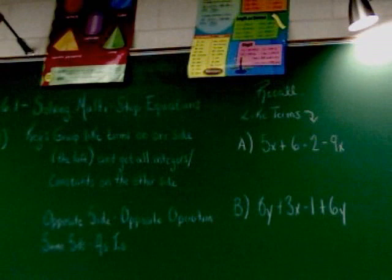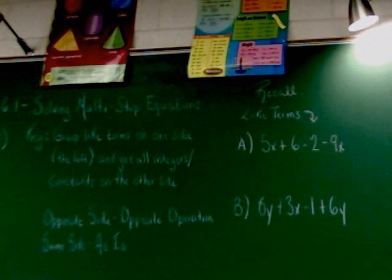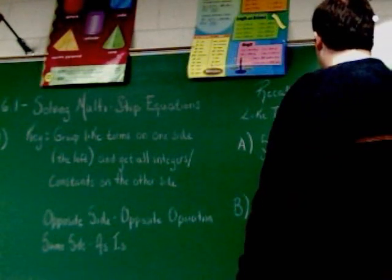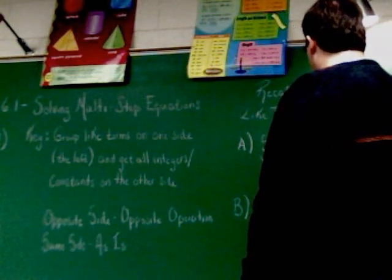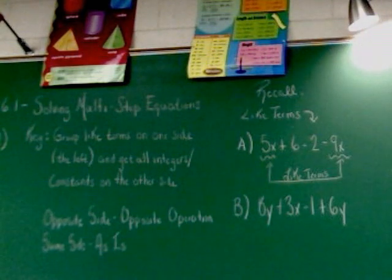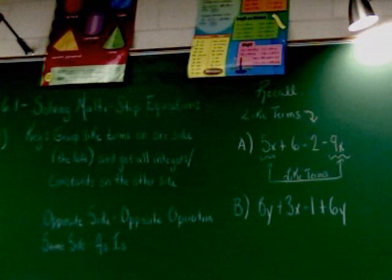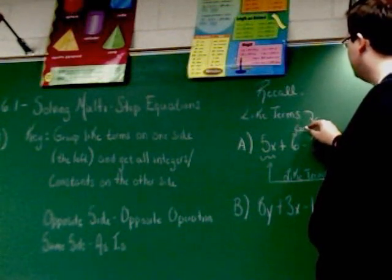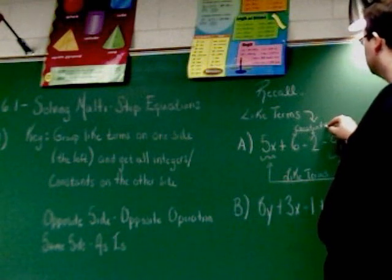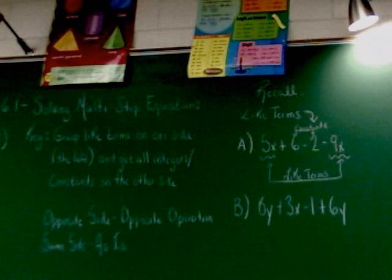So in that first one there, 5x plus 6 minus 2 minus 9x, the 5x and 9x are like terms. Again, that 5x and the 9x, really negative 9x because there's subtraction in front of it. The 5x and the 9x are like terms. 6 and 2 are what we call constants in this problem. We've discussed constants many times. It should be fresh in your head. Constants are lonesome numbers. No variable, no power, nothing funny going on there. Just a plain old number.